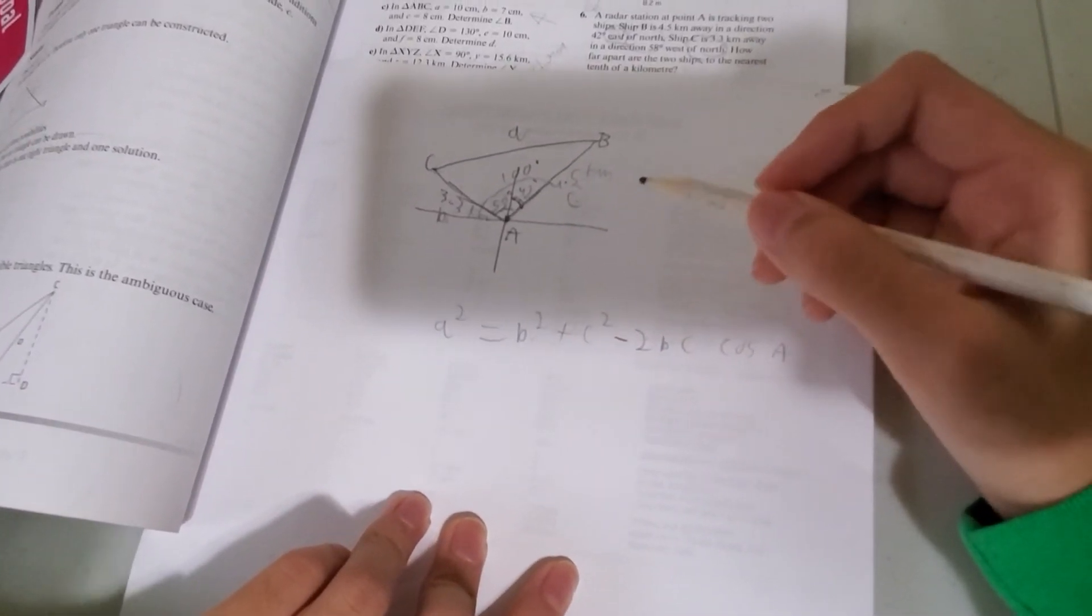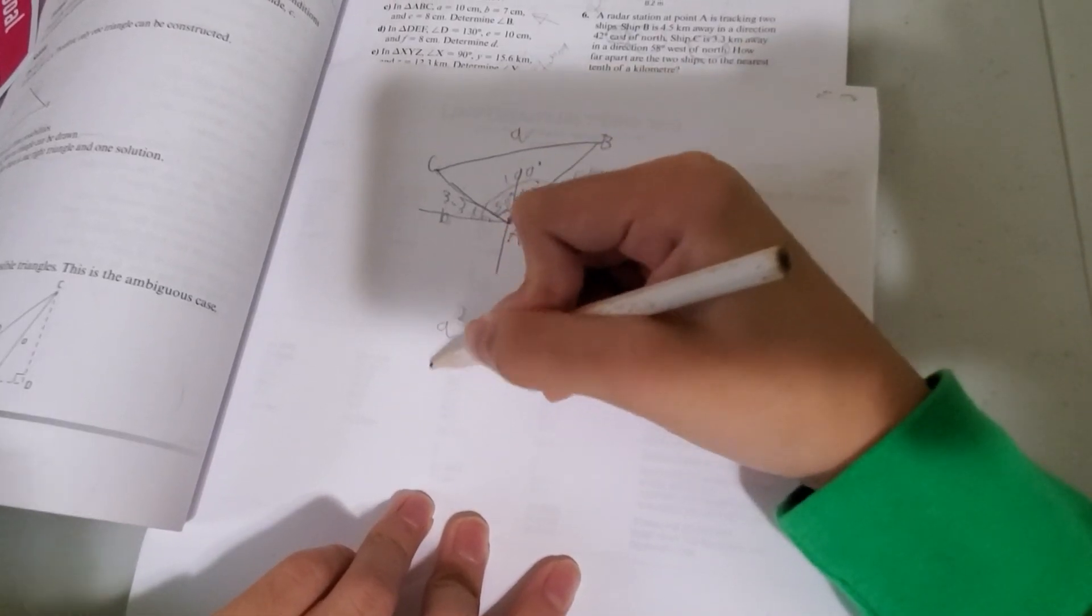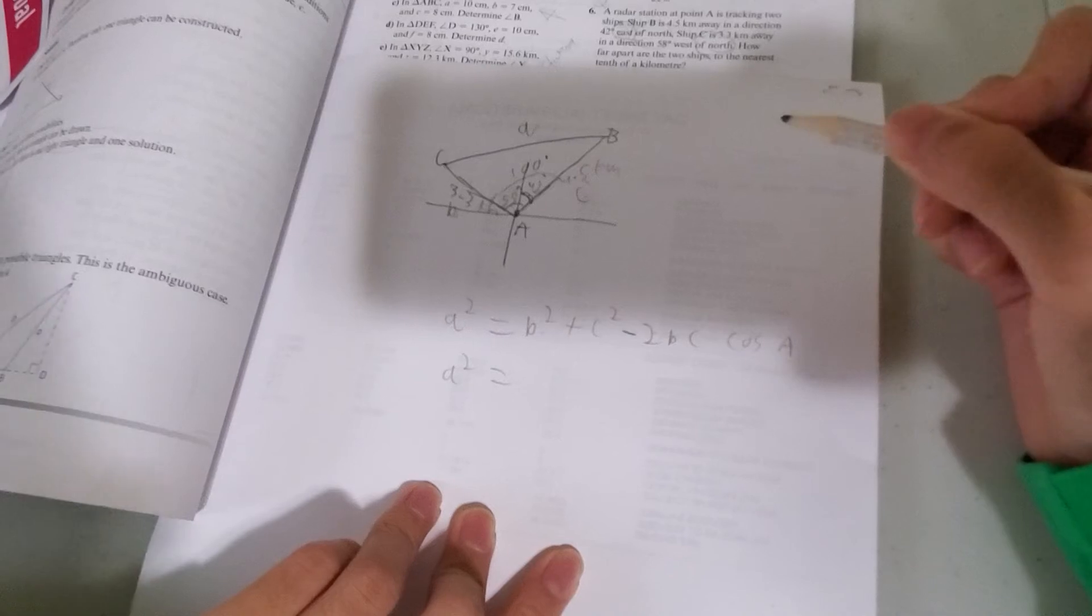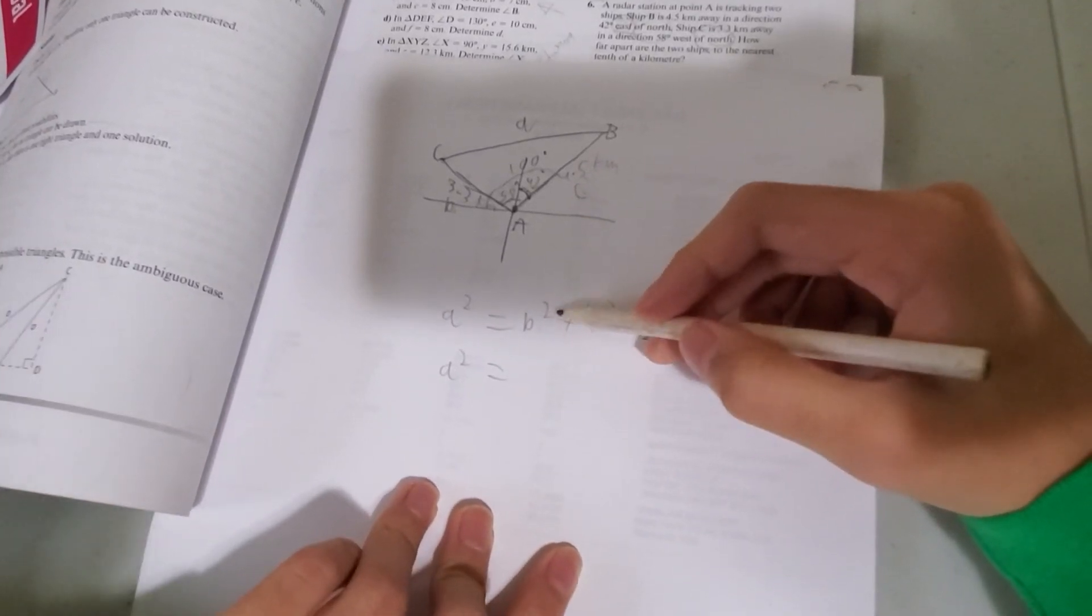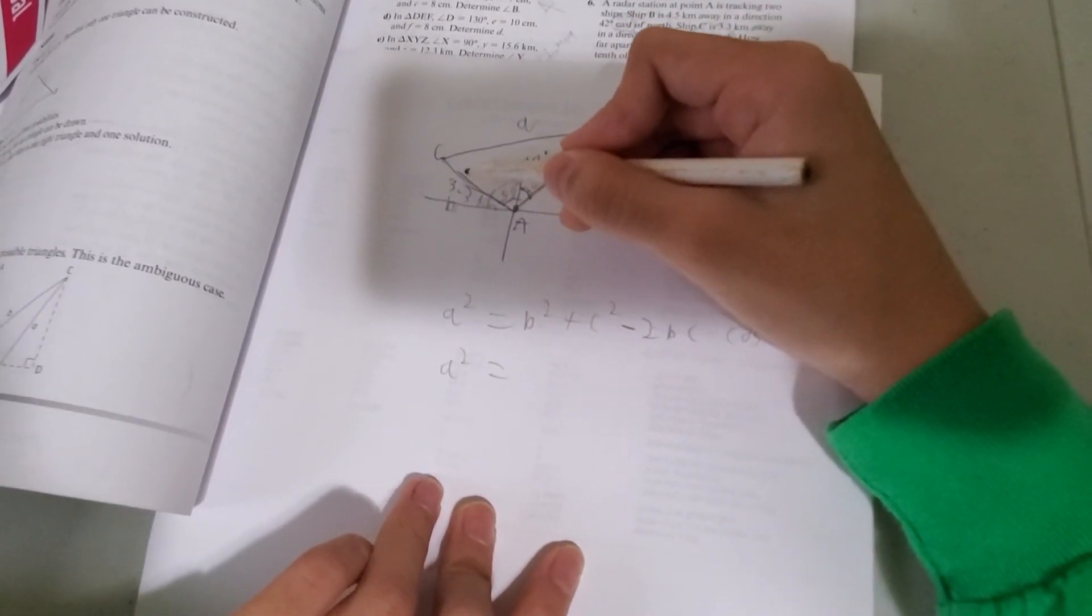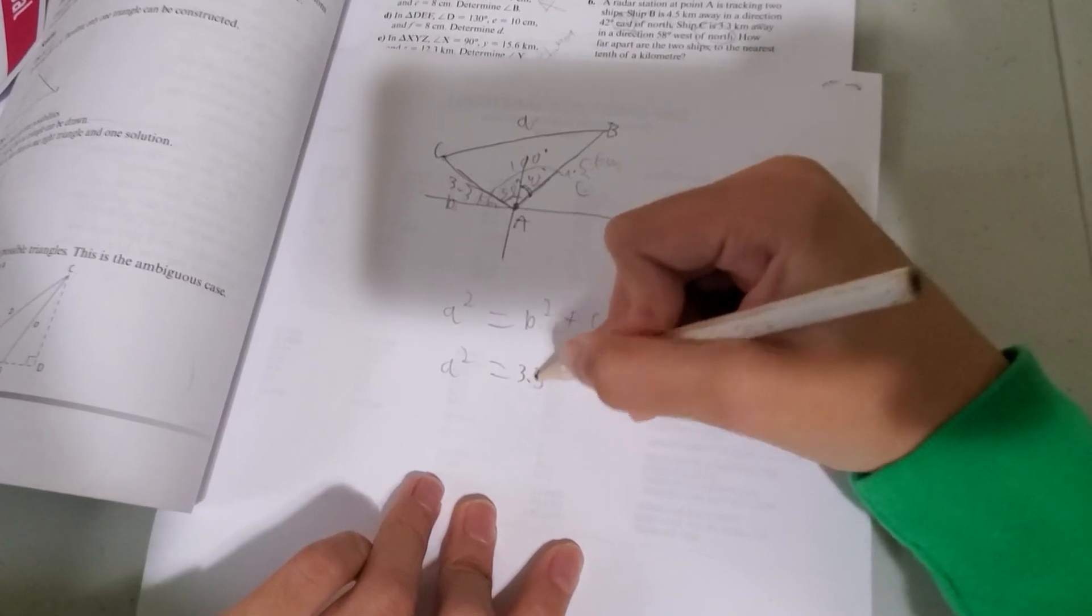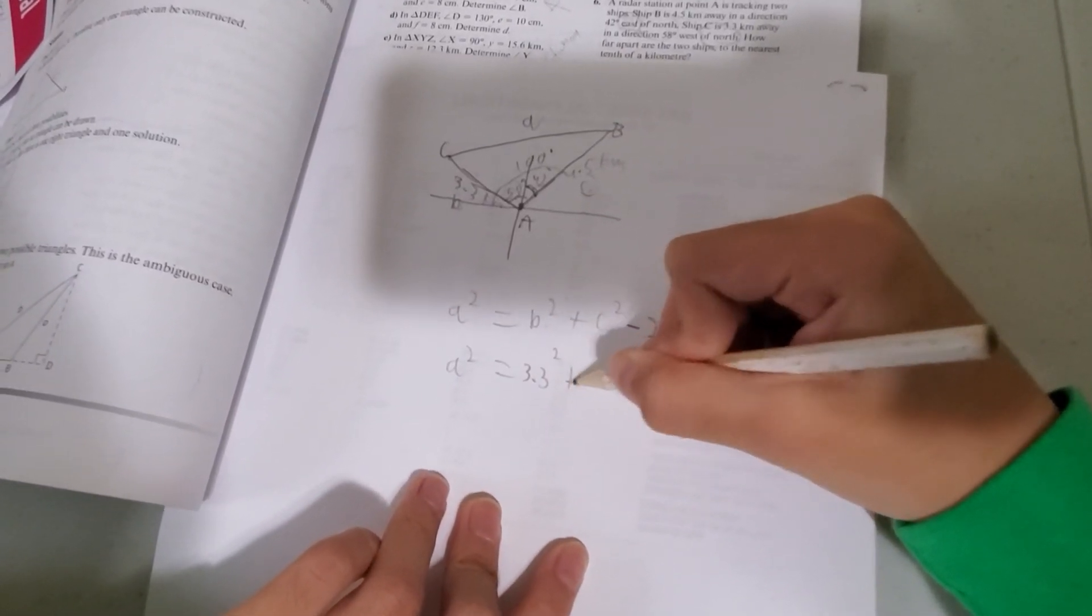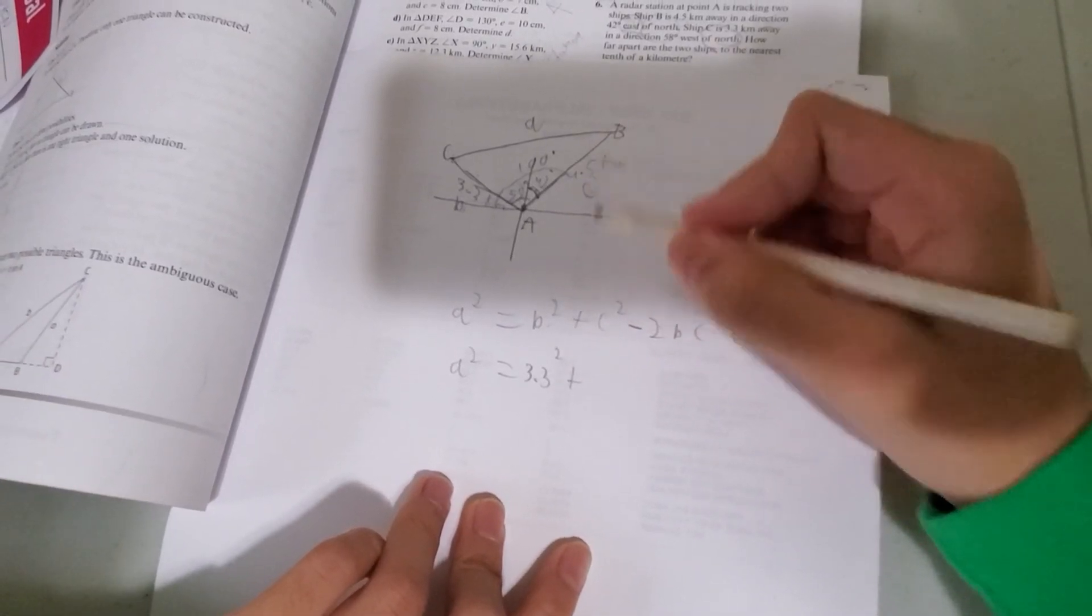So let's substitute our values here. We don't know A. Lowercase a. A squared equals B squared. We have 3.3 squared plus C squared, 4.5 squared.